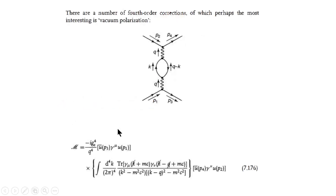Now we can have a diagram with more than one interaction vertex — here you have vertices one, two, three, and four. Remember that every interaction vertex adds a coupling constant, so with four interaction vertices we have a fourth-order coupling constant. Here G is your coupling constant, so we have a fourth-order coupling constant.